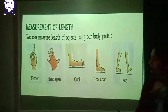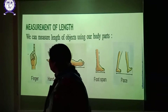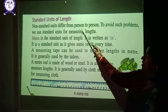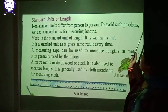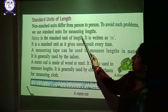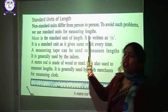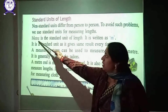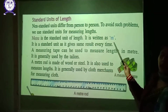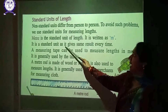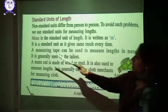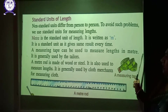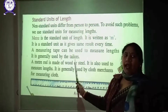Non-standard units differ from person to person. To avoid such problems, we use standard units for measuring length. Meter is the standard unit of length, written as 'm'. It gives the same results every time. A measuring tape can be used to measure length in meters and is generally used by tailors.